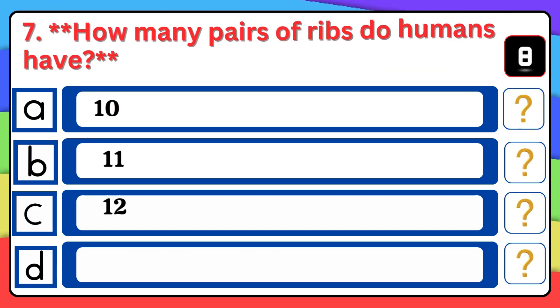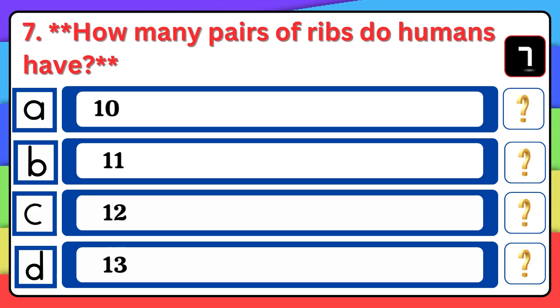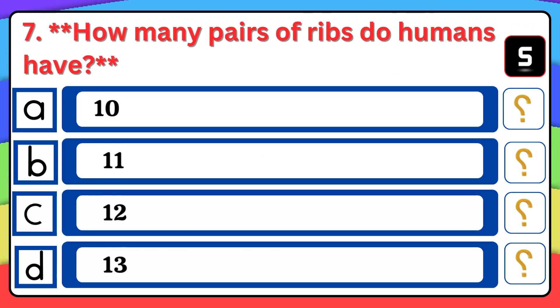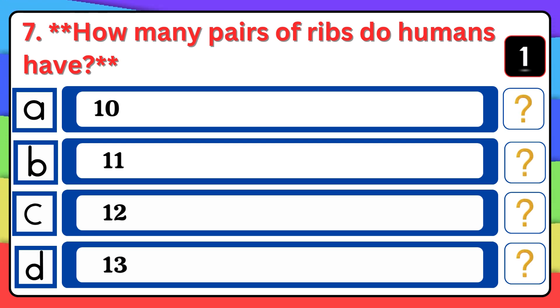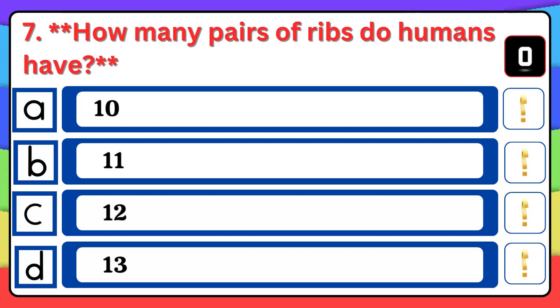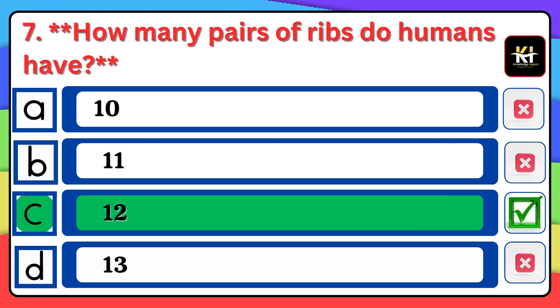Question number seven: How many pairs of ribs do humans have? Correct answer: Option C — 12.